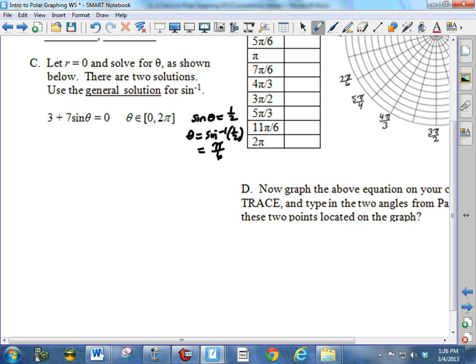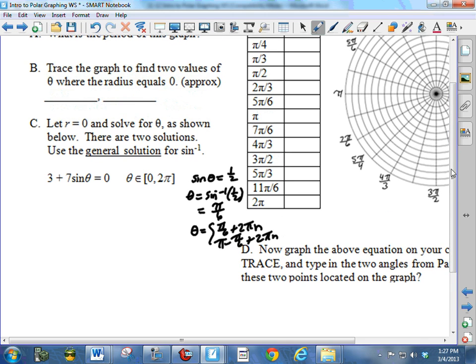And then to find theta though, we're going to say theta is equal to pi over six plus two pi n, or pi minus pi over six plus two pi n. Now, instead of having a specific number like pi over six, you're going to have some sort of a decimal value. So when you do inverse sine of negative three sevenths, you're going to get a decimal value, and you're going to take that decimal value plus two pi, then you're going to take pi minus that decimal value plus two pi n, and you're going to find two solutions that hopefully match the two that you found when you traced the graph.